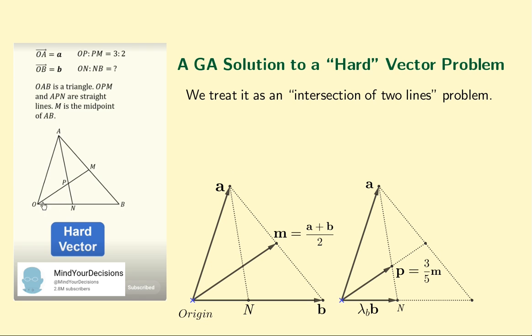So the two lines here are OB and AN, which we will intersect to find this point N. Mind Your Decisions did this by using coordinates, but we of course will use vectors. So how do we get started?